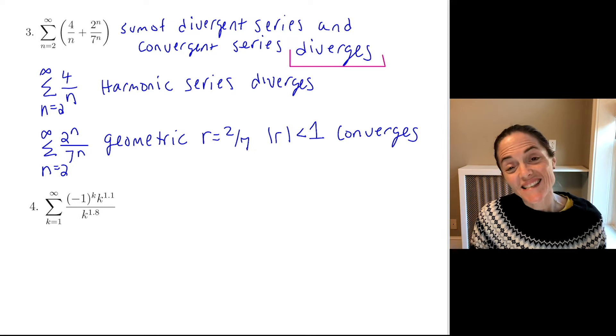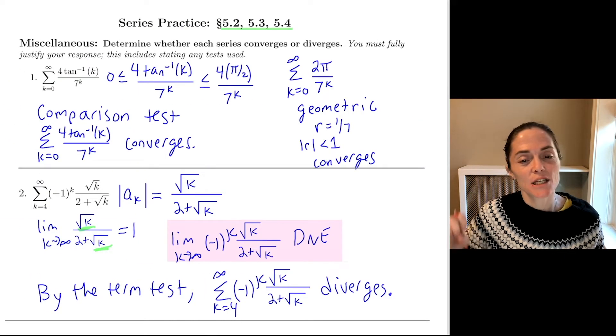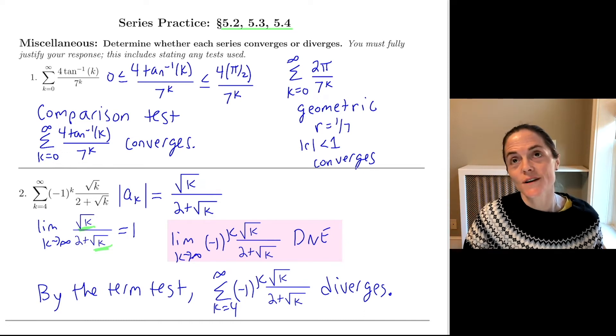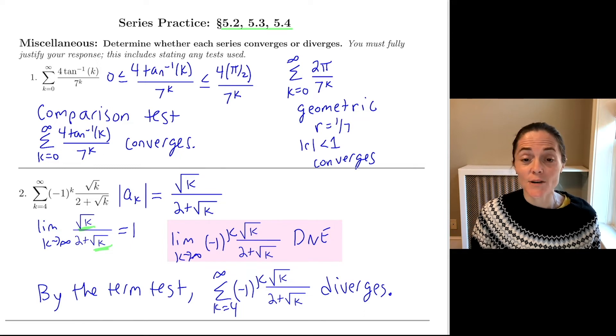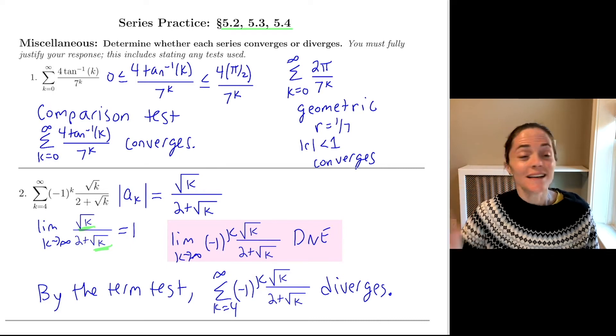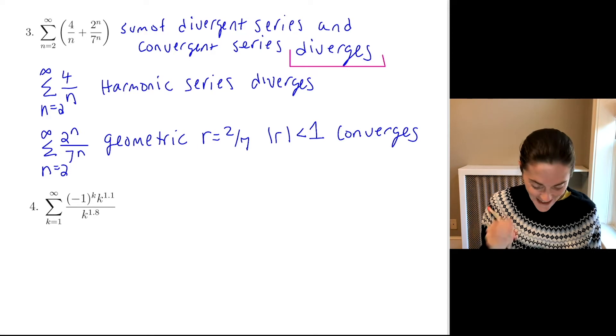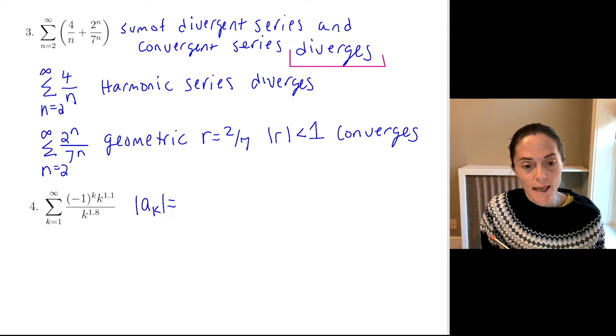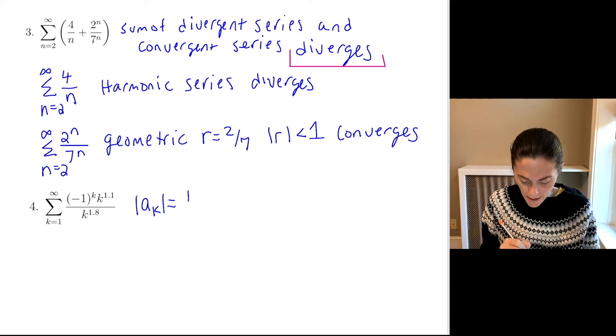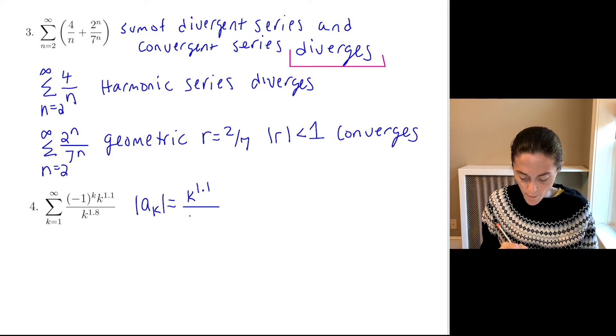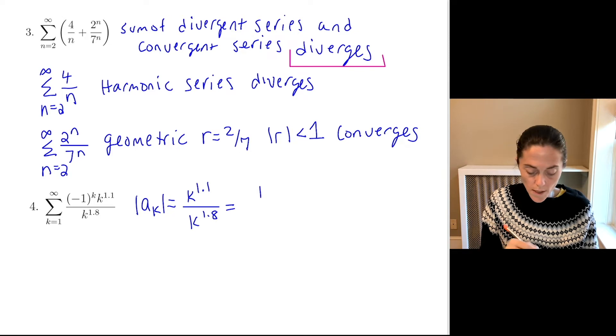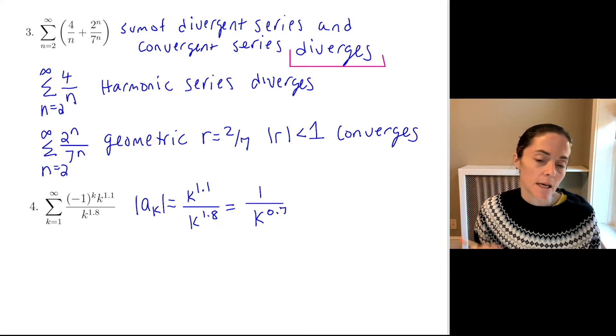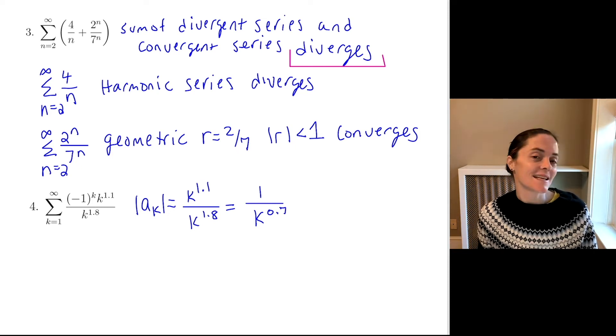This was number three. Now, number four. This is alternating, but you notice the directions. Determine whether each series converges or diverges. Fully justify your response. State any test used. In these problems, we are not asked between conditional convergence, absolute convergence, convergence, and diverges for an alternating series. All we care about right now is converges or diverges. So the nice thing is, I don't have to specify, but let's look at the absolute value of a_k. This is always the way I begin when I'm looking at an alternating series. This is k to the 1.1 divided by k to the 1.8, which I can rewrite. This is 1 divided by k raised to the 0.7.